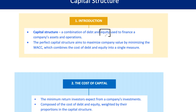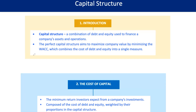Equity is where you sell a piece of your company to investors. Equity is more expensive because investors expect a higher return — they're taking on more risk since they get paid after all debts are settled. But equity is also flexible; it doesn't have to be repaid like debt. The mix of debt and equity forms your capital structure. The goal? Find the perfect blend that minimizes your weighted average cost of capital, WACC, and maximizes your company's value.